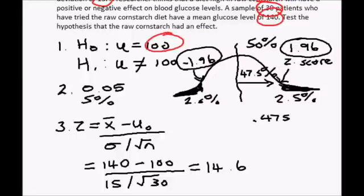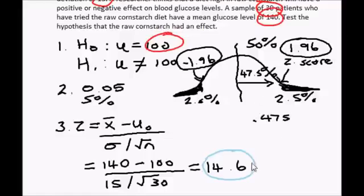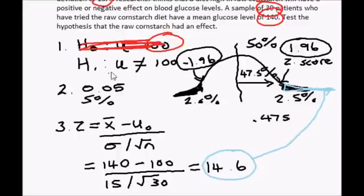We take our test statistic of 14.6 and check if it falls into one of the rejection regions. Since 14.6 is much larger than 1.96, it would fall way out to the right on the normal distribution curve, which is in the rejection region. Therefore, we can reject the null hypothesis, meaning our alternate hypothesis stands — the mean is not equal to 100.